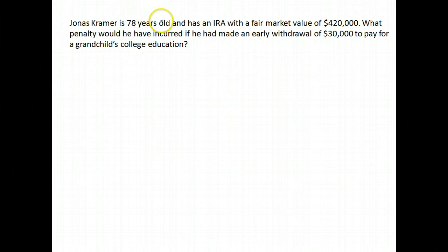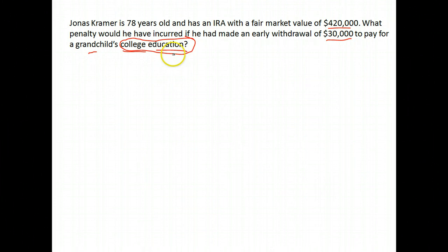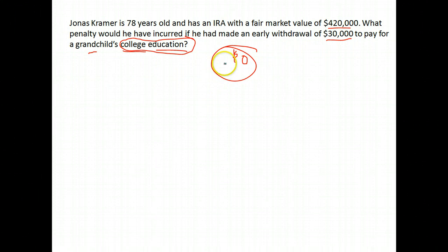Jonas Kramer is 78 and has an IRA with a market value of $420,000. What penalty would he incur if he made an early withdrawal of $30,000 to pay for a grandchild's college education? Normally you're penalized 10% of what you take out, but if the amount is for your college education, your child's, or your grandchild's education, there is no penalty. So his penalty would be nothing because he was taking the money out for his grandchild's education.